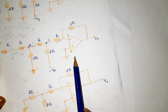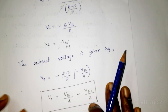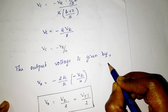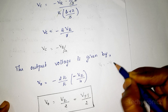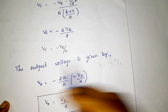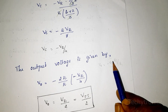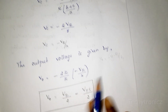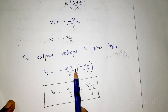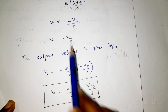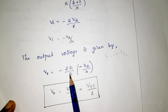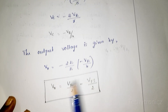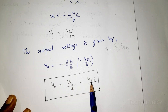Here we are using an inverting amplifier. The output of an inverting op-amp is V0 equal to minus Vi into Rf divided by R1. Vi is Vc, Rf is the feedback resistance 2R, and R1 is R. Substituting all values: V0 equals minus (2R/R) into (minus VR/4). Minus into minus gives plus, R cancels, and 2 and 4 cancel to give 1/2. So V0 equals VR by 2. Substituting VR equal to Vfs, the output voltage of R2R Ladder type is Vfs divided by 2.